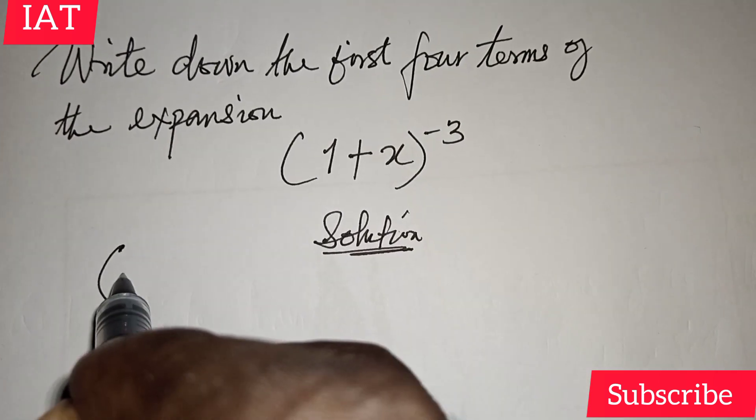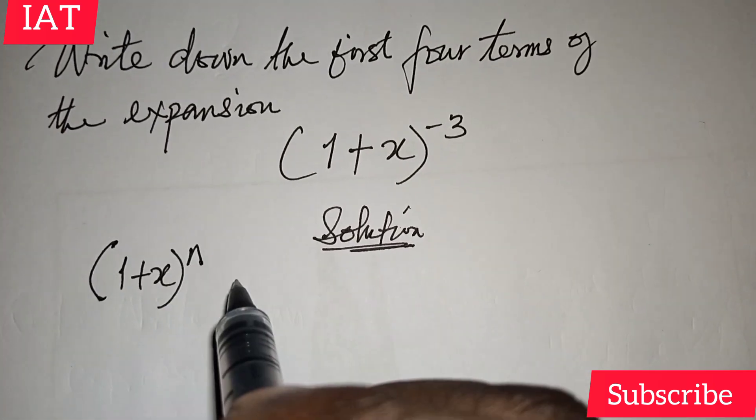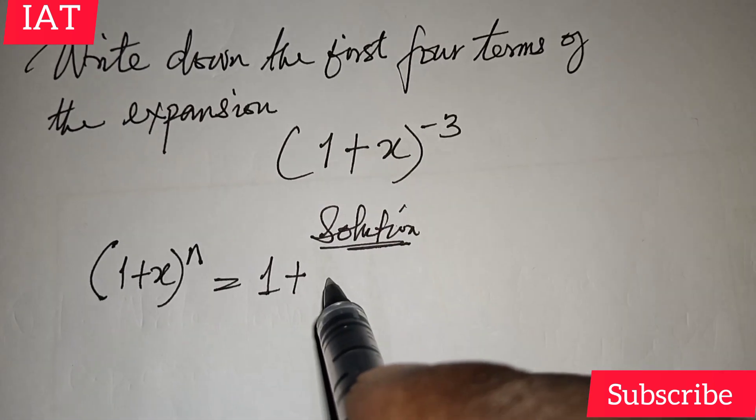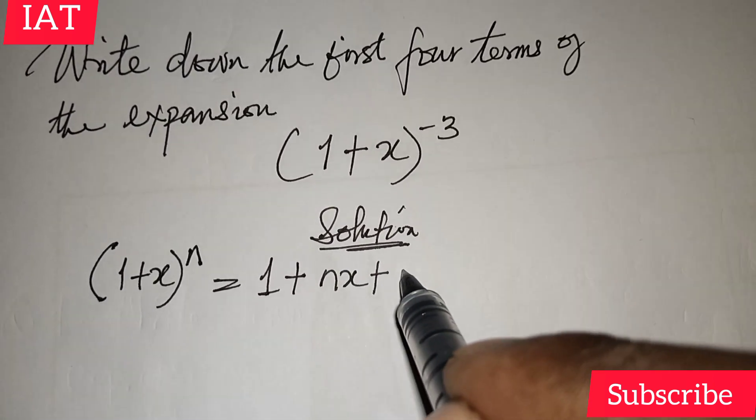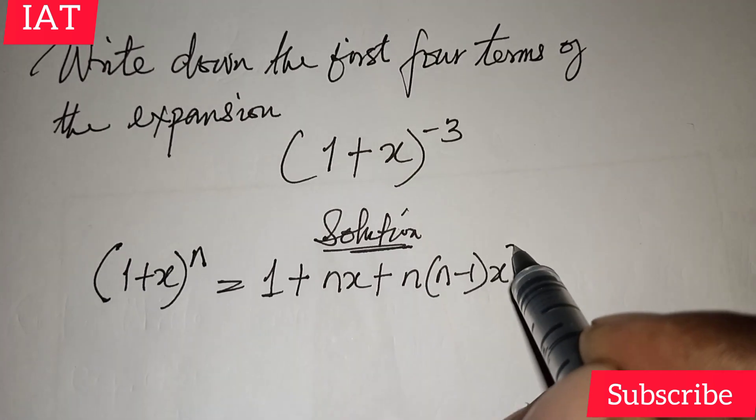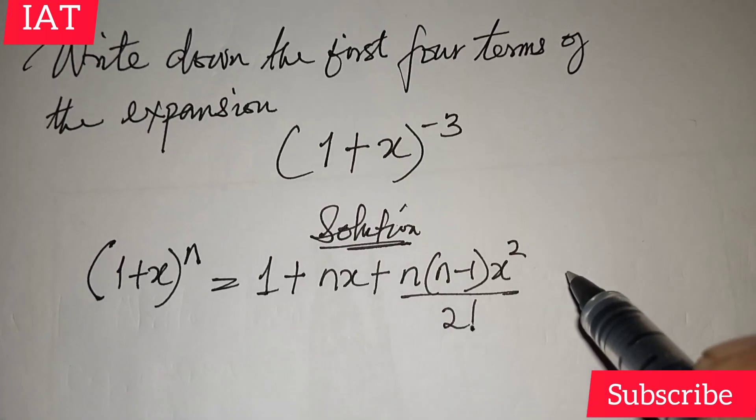And this is the theorem. It states that we have (1+x) all to the power of n. The result to this will be 1 being the first term plus nx, that's the second term, plus n into (n-1), x to the power of 2, all over 2 factorial, that's the third term.